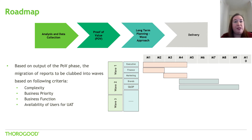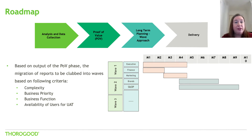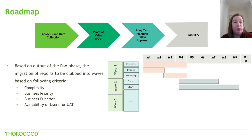When working out what the migration waves need to be and how to prioritize them, it could be down to a departmental level, complexity, highest priority, new business functions, or availability of users for UAT. You'll need to work that plan out, and it will vary based on the number of reports and their complexity.